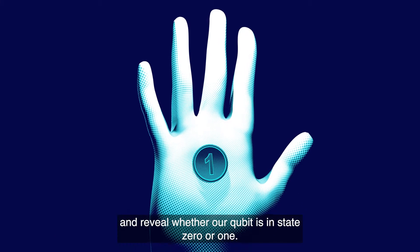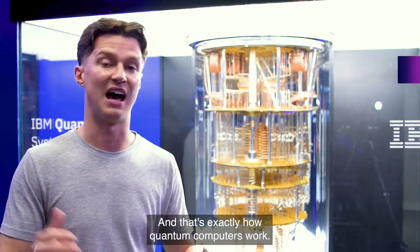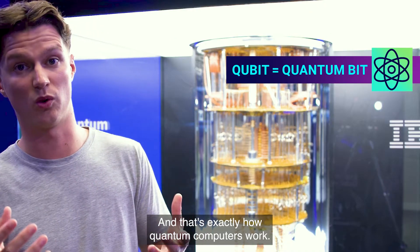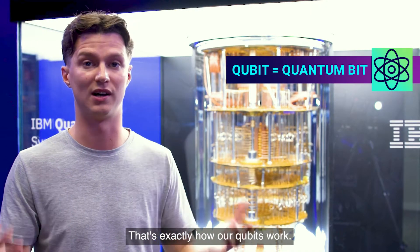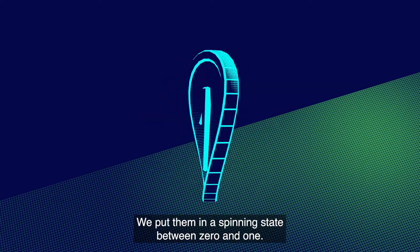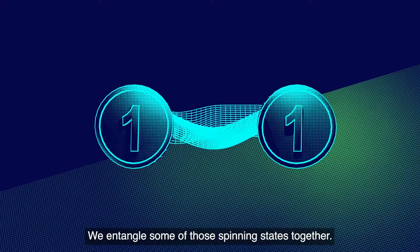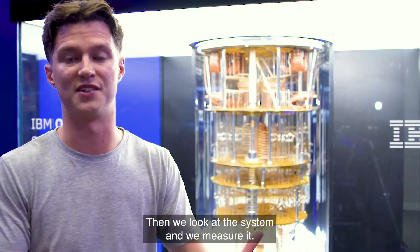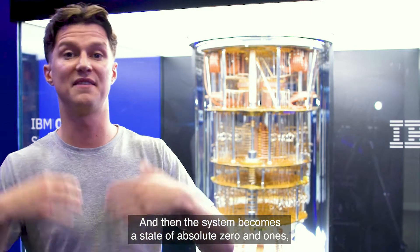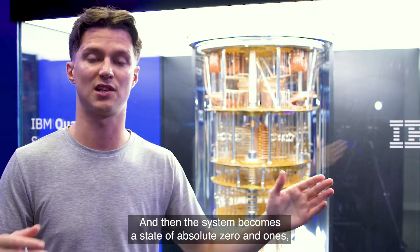And that's exactly how quantum computers work, that's exactly how our qubits work. We put them in a spinning state between zero and one, we entangle some of those spinning states together, then we look at the system and we measure it.